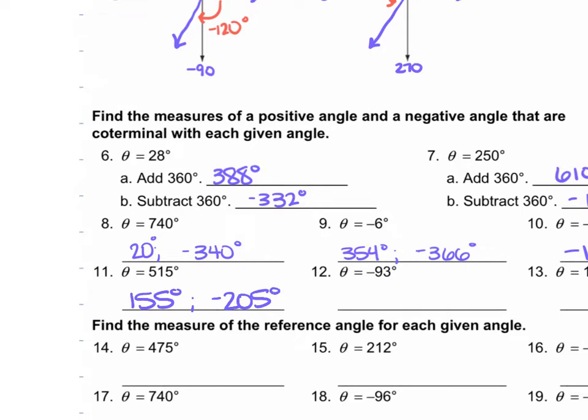For number 12, we have negative 93 degrees. We add 360 to get positive 267 degrees. Then we subtract 360 from negative 93 and get negative 453 degrees.